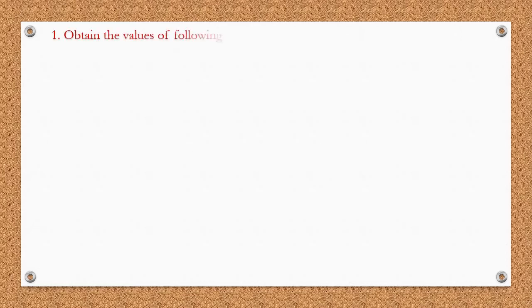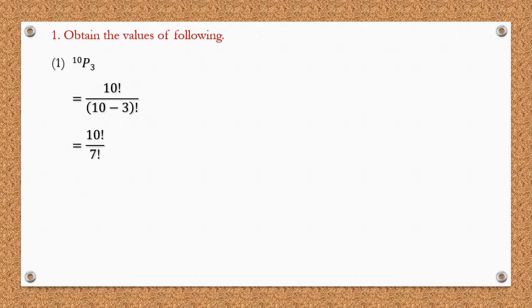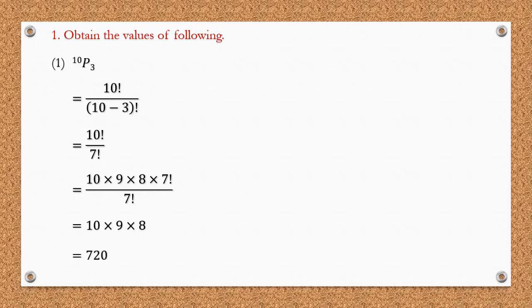Question 1: Obtain the values of the following. The first question is 10P3. Using our standard formula of n factorial upon n minus r factorial, we calculate 10P3 as 10 factorial divided by 10 minus 3 factorial, which is 10 factorial upon 7 factorial. Expanding: 10 × 9 × 8 × 7! divided by 7!, the 7 factorials cancel, leaving 10 × 9 × 8 = 720. So the answer for 10P3 is 720.